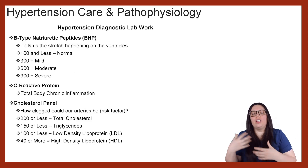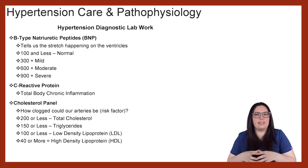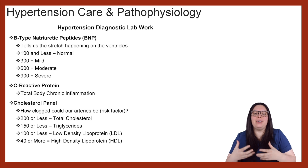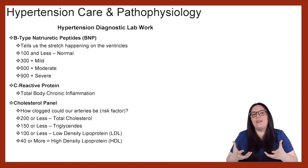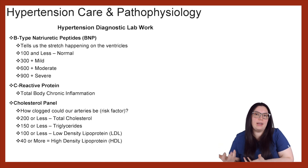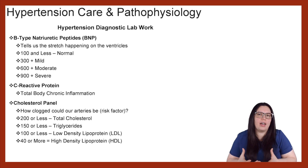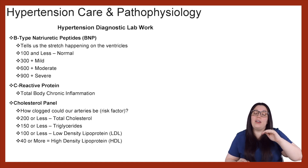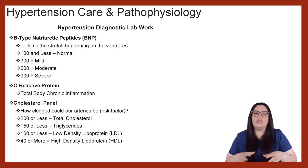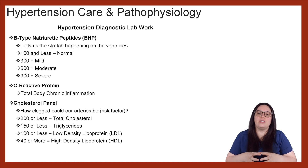So now that we know about imaging, what about our lab work when it comes to the diagnostics of hypertension? We have B-type natriuretic peptides, also known as BNP, and this tells us the stretch that's happening within our ventricles. A value of 100 or less is a normal BNP. Once we start getting into 300 plus, we're looking at mild issues; 600 plus is moderate; and 900 plus is very severe. You're going to see this highly elevated in our congestive heart failure patients because of the massive stretch happening within the ventricles.